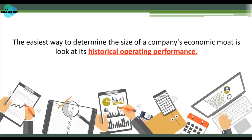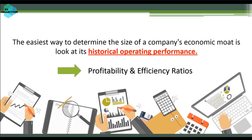The easiest way to determine the size of a company's economic moat is to look at its historical operating performance. To evaluate a company's operating performance, you can use some profitability and efficiency ratios, then compare its ratio values with that of its competitors and the industry average. If the company you're evaluating maintains a better and more efficient operating performance than its competitors, it's clearly the winner, and you can expect that it will survive in the next decades.